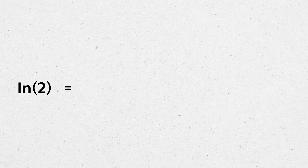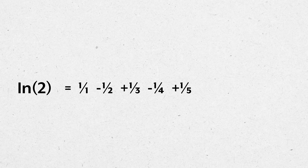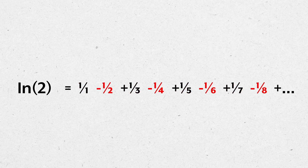The irrational number ln 2 can be written as the infinite series 1/1 minus 1/2 plus 1/3 minus 1/4 plus 1/5 minus 1/6 plus 1/7 minus 1/8 and so on. We're adding the reciprocals of all odd natural numbers and subtracting the reciprocals of all even natural numbers, with the exception of 0.